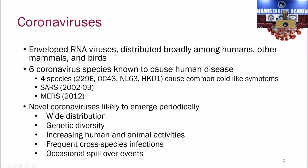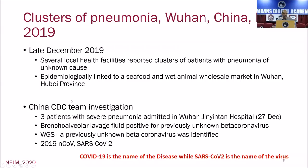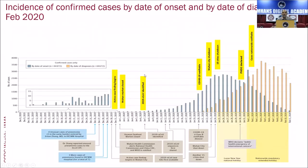The new virus emerged in December in Wuhan city and Hubei province of China. Cases started coming in from the 7th of December, and by 31st December, China had realized it was a new disease because many people were reporting with severe acute respiratory syndrome. A quick epidemiological analysis found that all of them had a connection to an open market in Wuhan. They informed the WHO on 31st December, the same day the Wuhan market was closed.